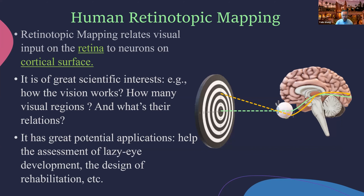What is human retinotopic matching? The idea is that by controlling the stimulus on the human retina and analyzing the response on the human cortical surface, we gain insight into the visual system. The cortical visual area is the largest single area in the human brain, so a good understanding of the region mapping from the retina to the cortical surface provides insights into human vision structure.